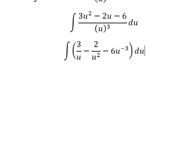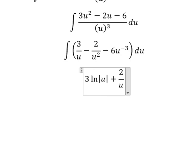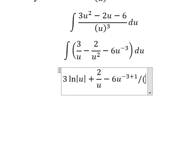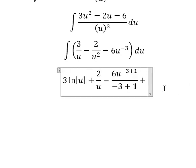So the integration of this one we have number three ln of the absolute value of u. The next one, that is positive number two over u. The next one, that is negative number three plus one over negative number three plus one, and I will put C.